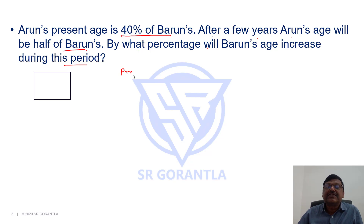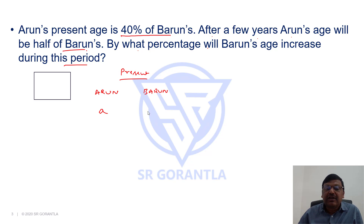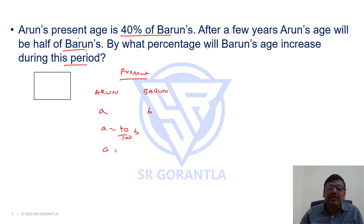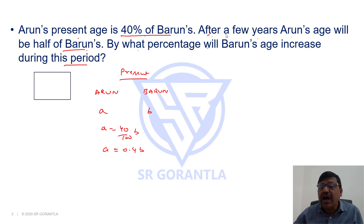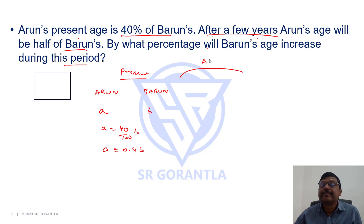Let's say at present, I assume Arun's age as A and Barun's age as B. The question says Arun's present age is 40% of Barun: A equals 40% of B, or A equals 0.4 times B. That is the present condition. The question says after a few years — we don't know how many years — let us say after X years.